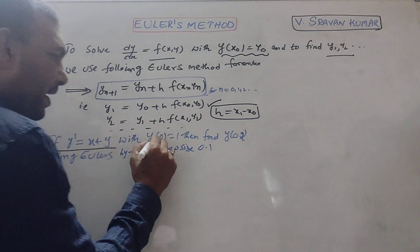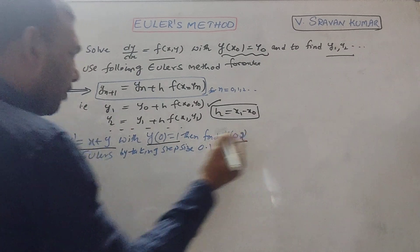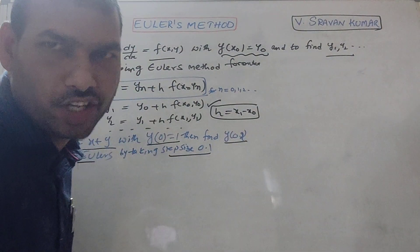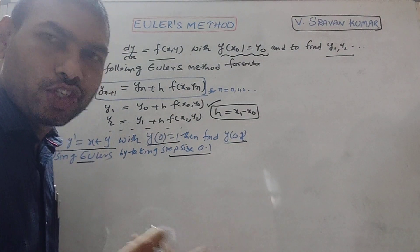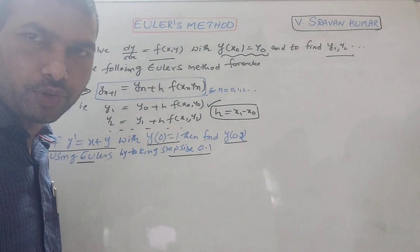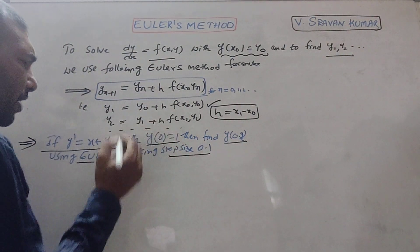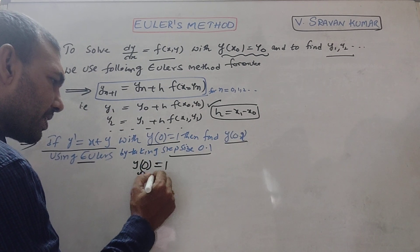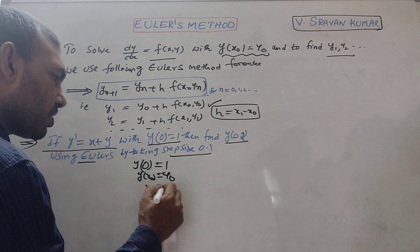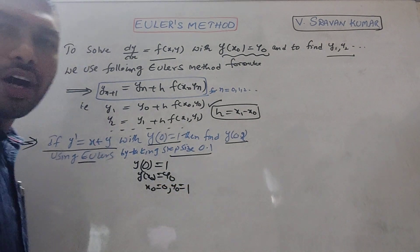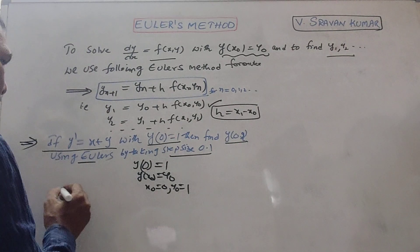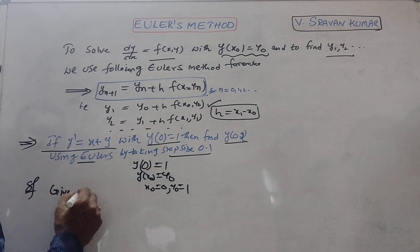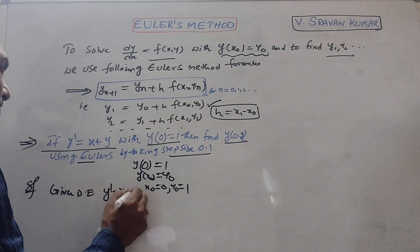Problem 1: If y' = x + y with y(0) = 1, find y(0.2) using Euler's method, taking step size h = 0.1. Here f(x, y) = x + y.